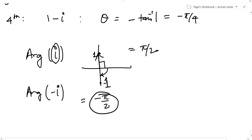Don't say the argument will be 3π by 2, because 3π by 2 is greater than π. And for principal value, the value should lie between minus π and π. So it will be minus π by 2.